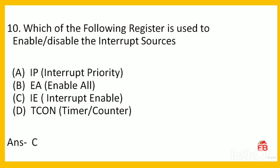Next: which register is used to enable or disable the interrupt sources? Options are interrupt priority, enable all, interrupt enable, or TCON (timer/counter). The correct answer is the interrupt enable register. So option C is correct.